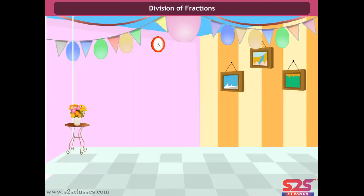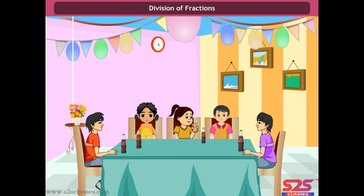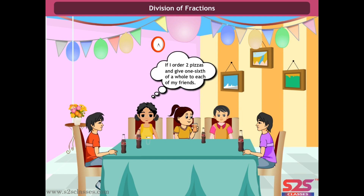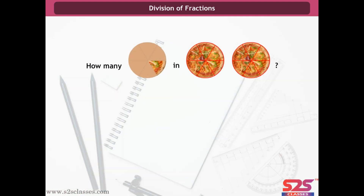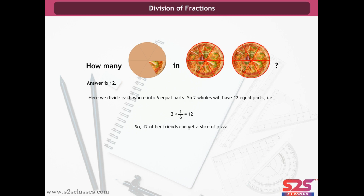Division of fractions. Nimisha got first position in her class and decided to throw a party. She ordered pizzas and thought: if I order two pizzas and give one-sixth of a whole to each friend, how many friends can get a slice? Dividing each whole into 6 equal parts, two wholes have 12 equal parts. So 2 ÷ 1/6 = 2 × 6/1 = 12. Thus, 12 friends can get a slice.